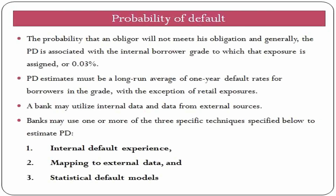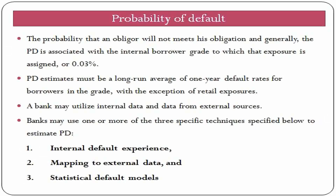Starting with probability of default — PD is the probability that an obligor will not meet his obligation. It is a financial term describing the likelihood of default over a particular time horizon, which is usually a year. The risk of default is derived by analyzing the obligor's capacity to repay the debt. PD is generally associated with the financial characteristics of the borrower, such as inadequate cash flow or high leverage. There are three techniques to arrive at PD: internal default experience, mapping to external data, and statistical default models. Banks can use one or more of these techniques. The simplest approach taken by most banks is to use external rating agencies such as S&P, Fitch, or Moody's for estimating PD along with historic default experience.